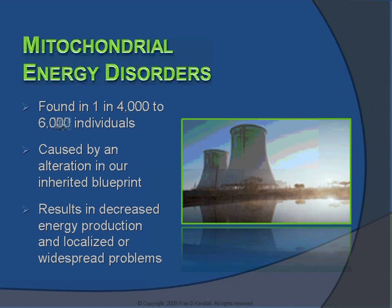What are mitochondrial disorders, and how frequently are they seen? They are currently believed to be found in 1 in 4,000 to 6,000 individuals, although some new data suggests they may be far more frequent. They are caused by an alteration in our inherited genetic blueprint — that which is passed on to us through our parents. Alterations in this blueprint result in decreased energy production and localized or widespread problems.